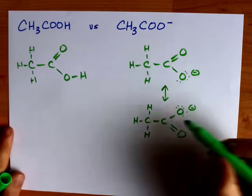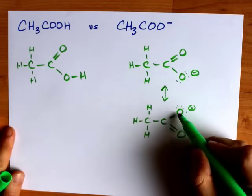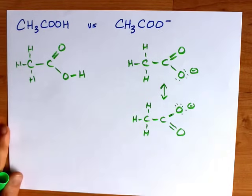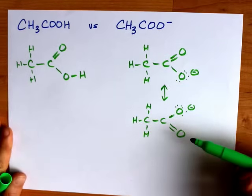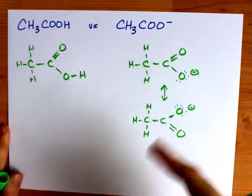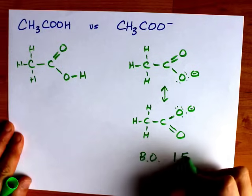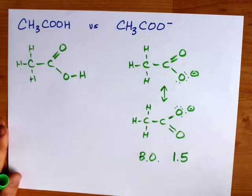What that means is that the bond between carbon and oxygen here is between single and double. And because they are equal contributors to the hybrid resonance structure, the bond order between carbon and oxygen here is 1.5 for each of them.